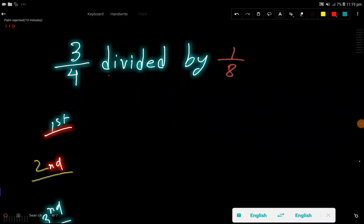3 over 4 divided by 1 over 8. So I am going to translate this sentence - divided by means this division sign. Then we have 1 over 8.